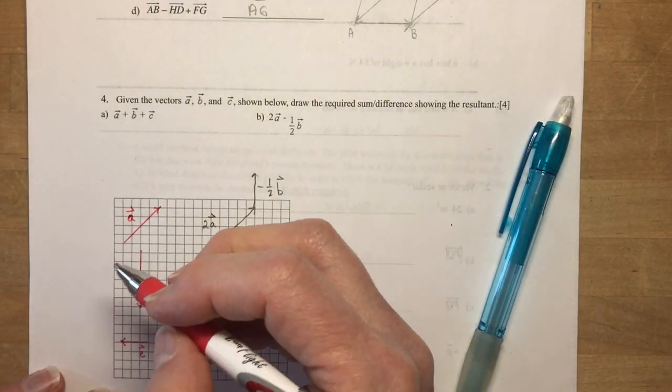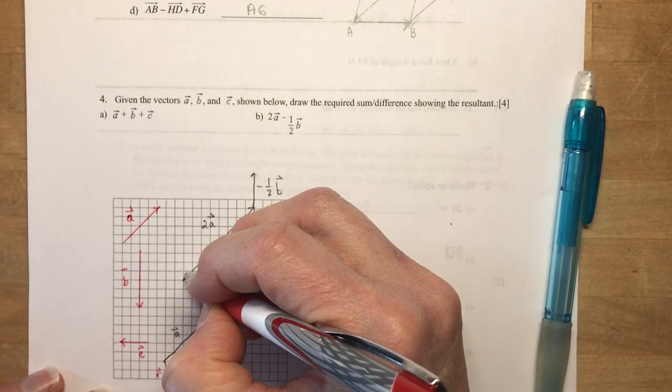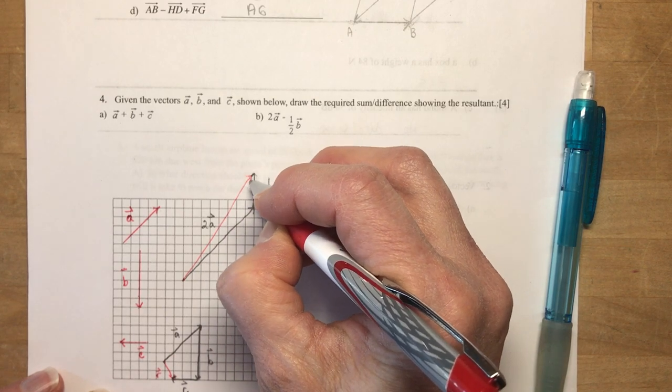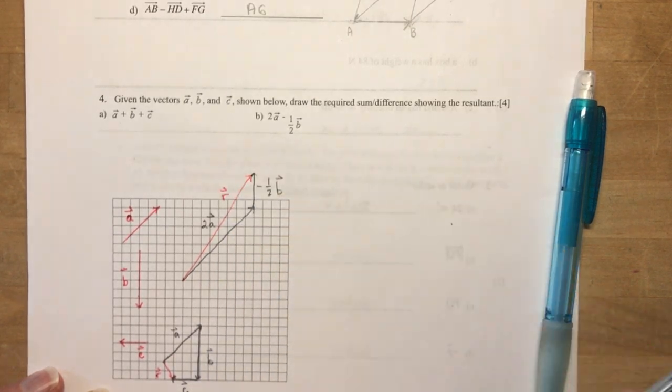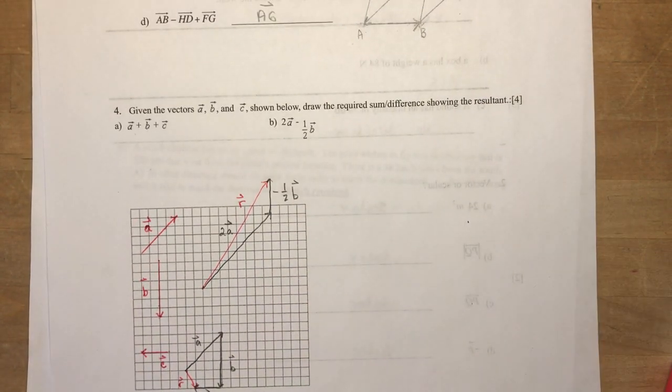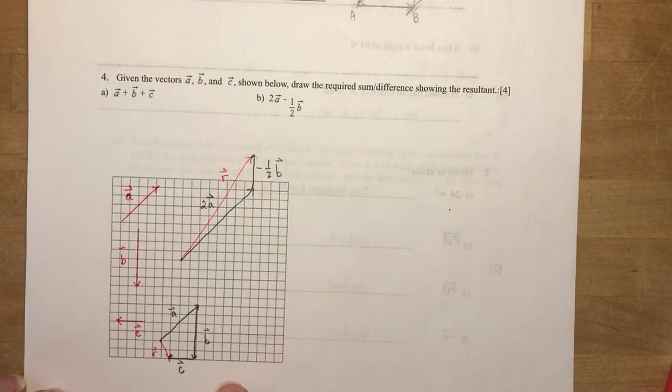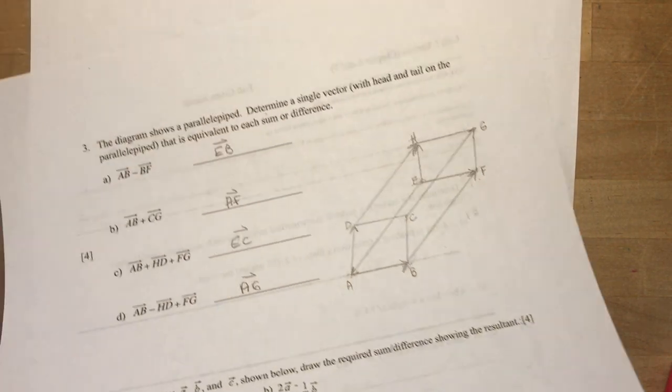And my resultant is going to be from here to here. Be nice if you used a ruler. So that was pretty simple as well. Just seeing that you know how to sketch and add a few little vectors together.